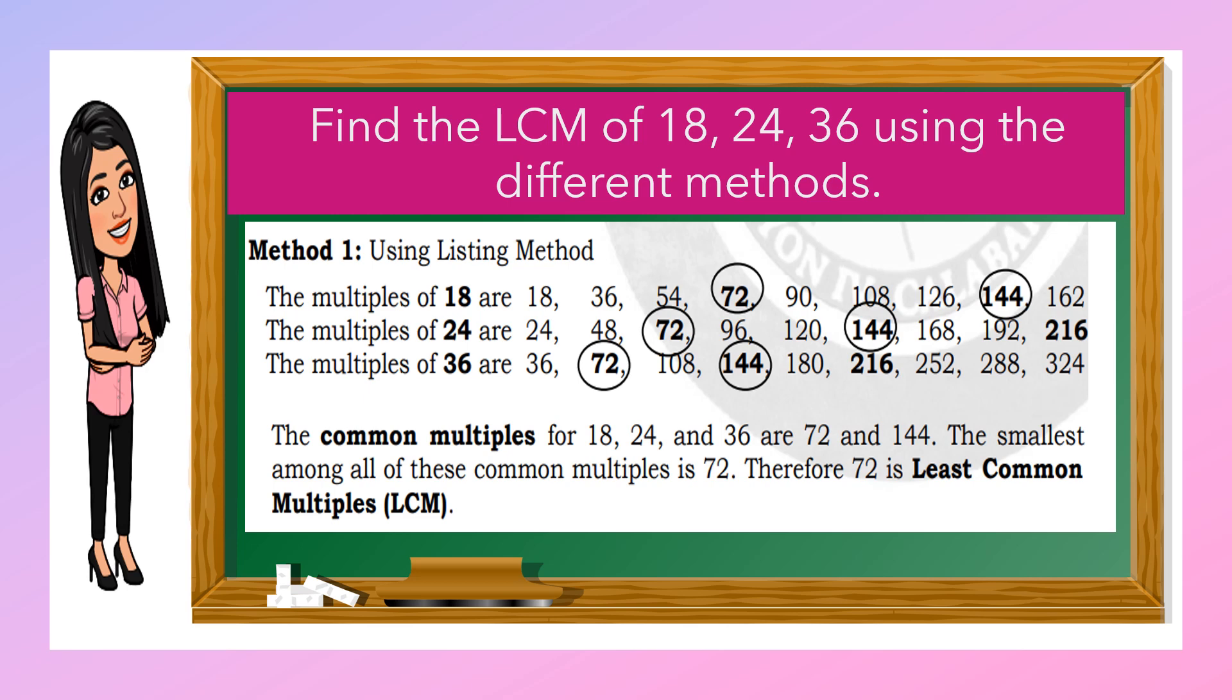Next, find the LCM of 18, 24, 36 using the different methods. So, a while ago, we discussed the GCF, the greatest common factor. This time is the LCM - least common multiple. Least means lowest. Common multiples means same multiples. Again, multiples, we will use skip counting. So, the multiples of 18 are 18, 36, 54, 72, 90, 108, 126, 144, 162.